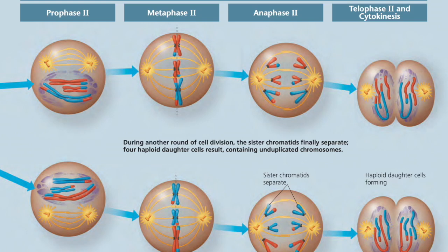Moving into meiosis 2, not much happens during prophase 2. In metaphase 2, chromosomes line up in the center. During anaphase 2, they separate into daughter chromosomes. And once telophase occurs, we actually produce four haploid cells, each containing one set of the entire chromosomal package. Not only that, but each of those gametes will have a unique combination of chromosomes and genes.